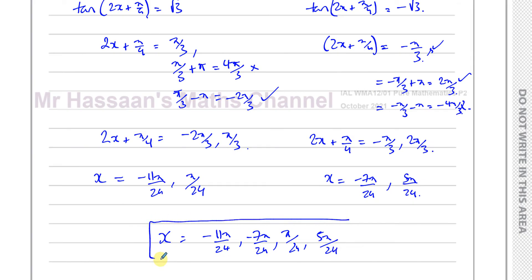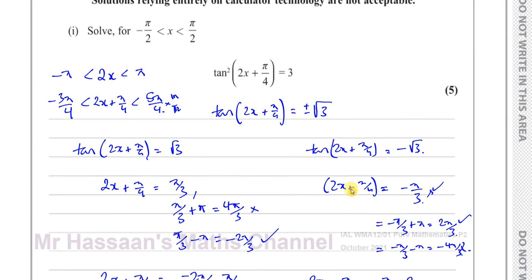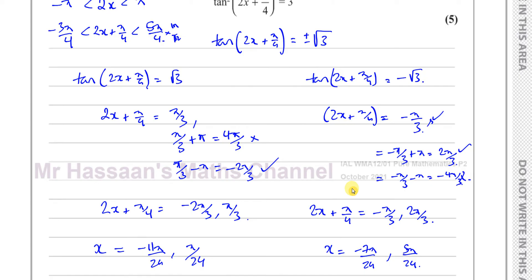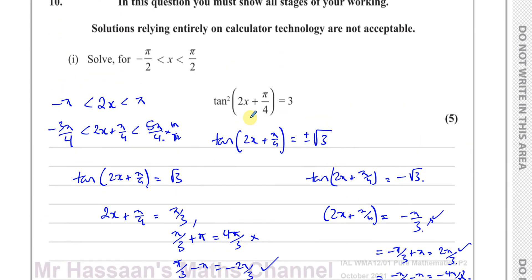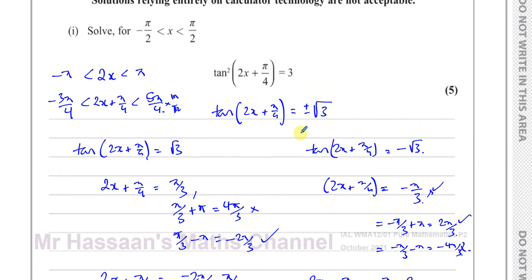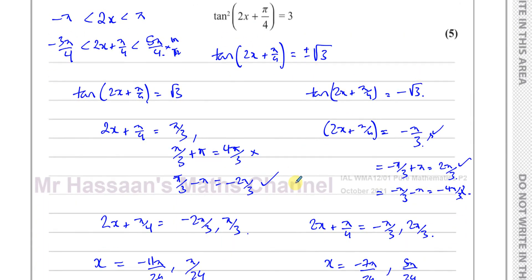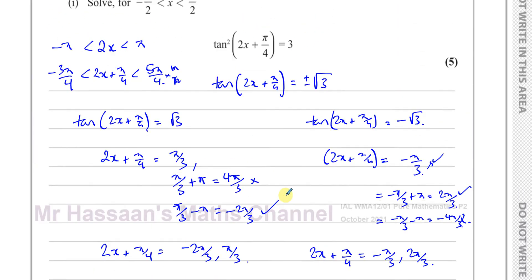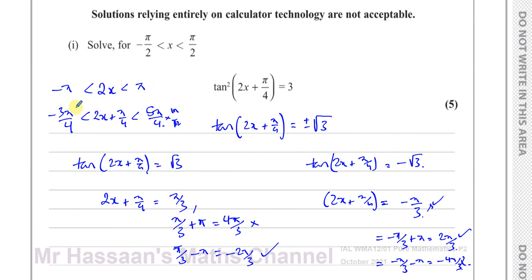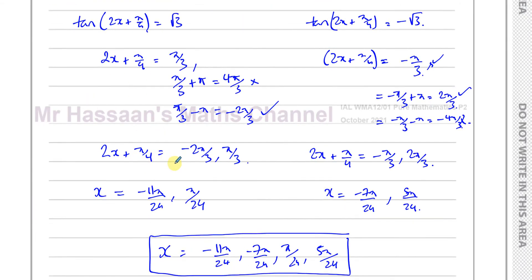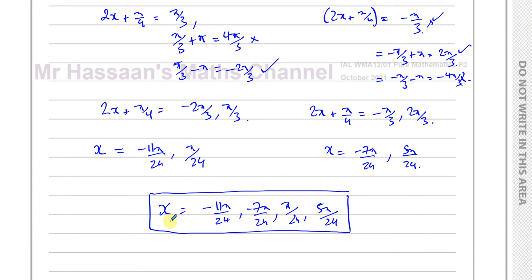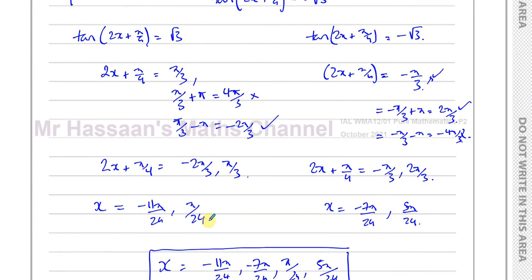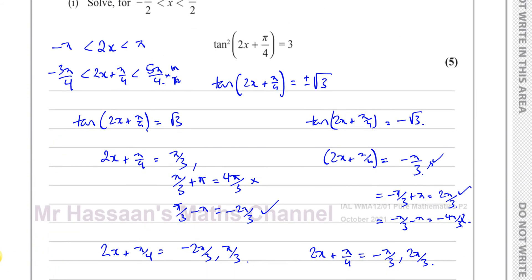Those are all the solutions for this equation. The important things to note: use radian mode; don't forget ±√3 or you'll lose half the solutions; and always transform the limits to match the argument inside the trig function.